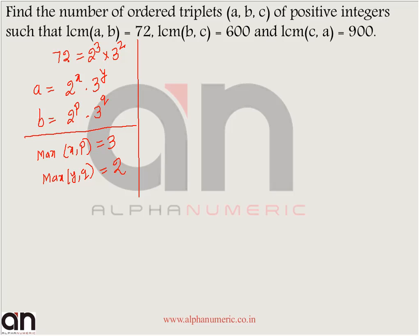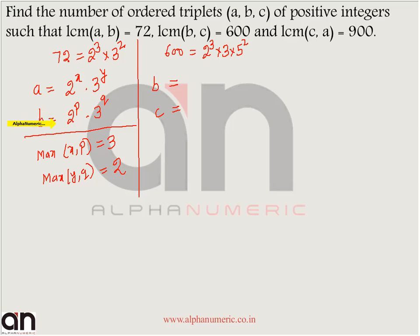The next number is 600. If you factorize 600, you get 2 cubed into 3 into 5 squared. B and C must consist of powers of 2 and 3. Since LCM of A and B is 72, B can only have powers of 2 and 3 — it cannot have a power of 5, because if it did, the LCM of A and B could never be 72.